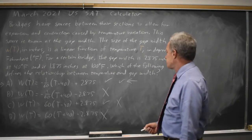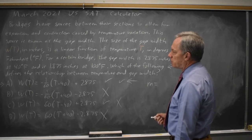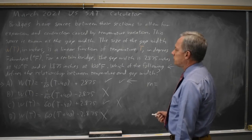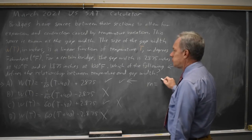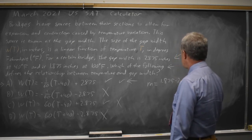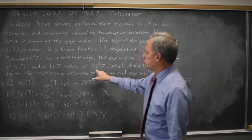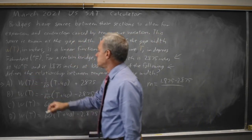Alternatively I could solve for the slope. The slope is y2 minus y1, or in this case width 2 minus width 1, which is 1.875 minus 2.875 over temperature 2, which is 100, minus temperature 1, which is 40.